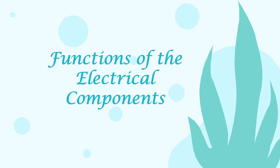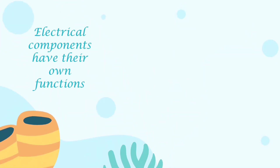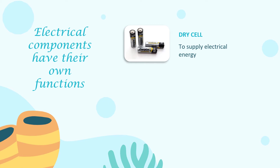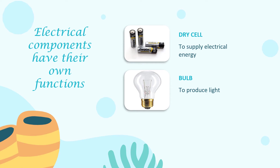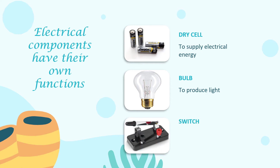Now we move to the next topic: Functions of the electrical components. Electrical components have their own functions. Dry cell — its function is to supply electrical energy. Bulb — its function is to produce light. Switch — its function is to complete and break an electrical circuit.